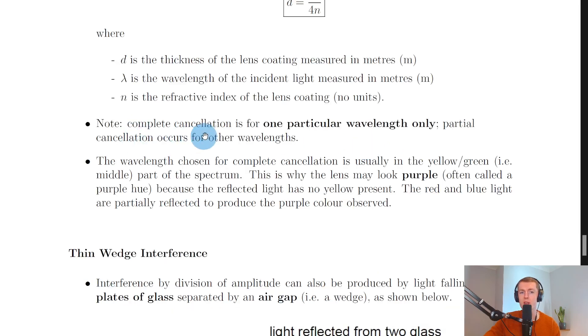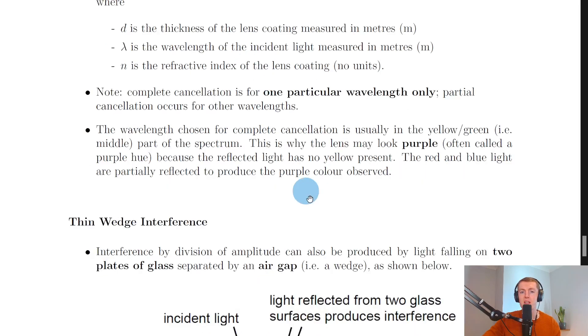It then says to note that complete cancellation is for one particular wavelength only. Partial cancellation occurs for other wavelengths. Lastly, it says that the wavelength chosen for complete cancellation is usually in the yellow or green, i.e. middle part of the spectrum. This is why the lens may look purple, often called a purple hue, because the reflected light has no yellow present. The red and blue light are partially reflected to produce the purple color observed.